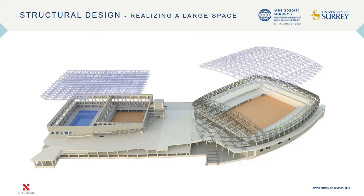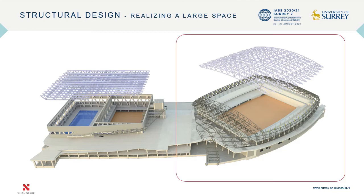Let's move on to the next topic: structural design. The structural design concept was to solve large spaces with various forms using a simple planar truss as a basic structure. As you can see on the right, the main arena building has a symbolic organic oval form. The roof frame was structured by steel pipe trusses with simple planar trusses as a basic unit.